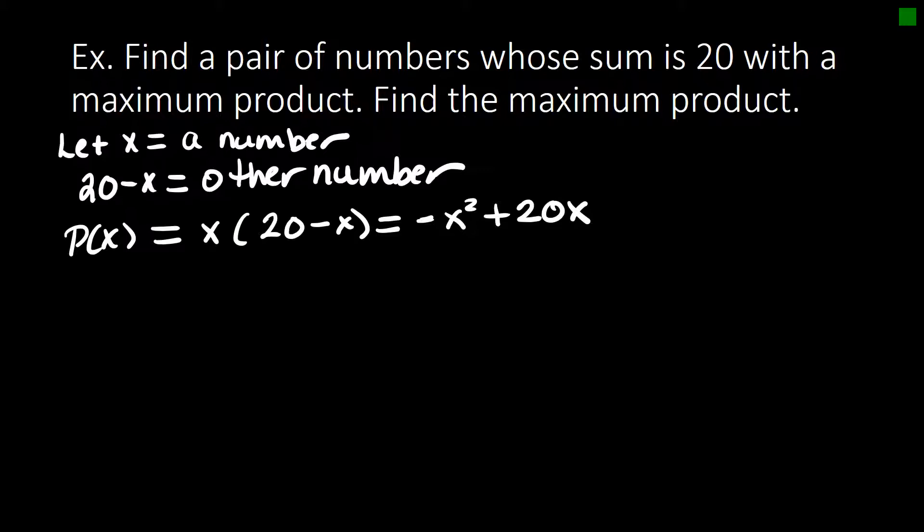So let's look at our vertex formula. If we look here, a is going to be negative 1, b is going to be 20. We don't have a c, so that's zero.